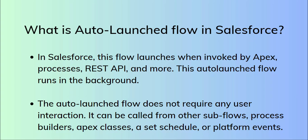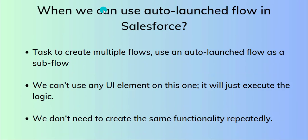When we use a record trigger flow or a screen flow, the screen flow has UI components like text boxes and screen components, and the record trigger flow triggers when we create, update, or delete a record. But in an auto launch flow, we only write logic for a particular operation. For example, if we have multiple flows that need shared functionality, we can use an auto launch flow as a sub-flow. It executes the logic without any UI component, so we don't need to create the same functionality repeatedly.